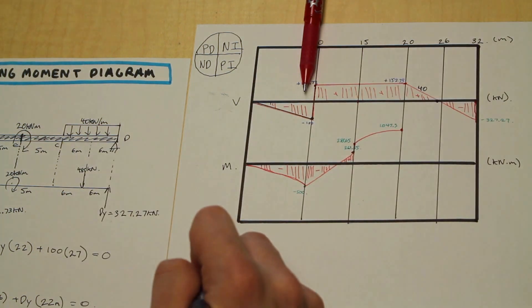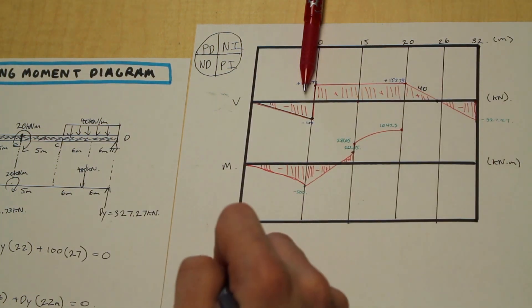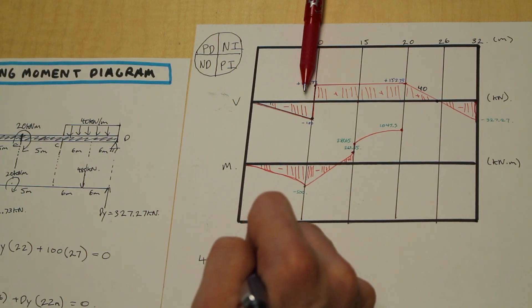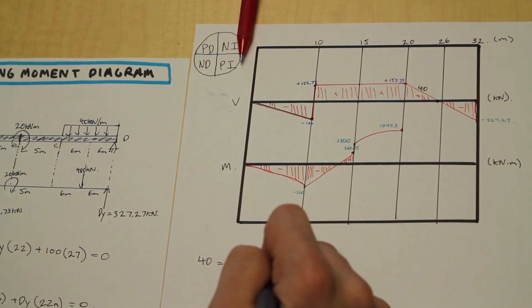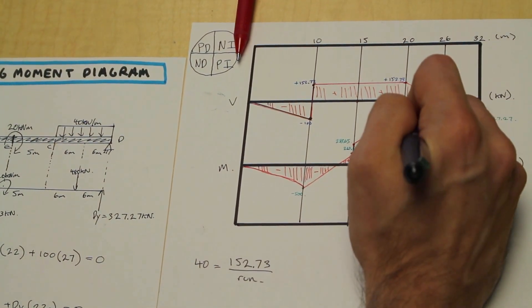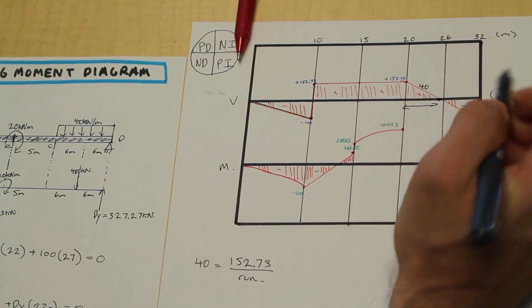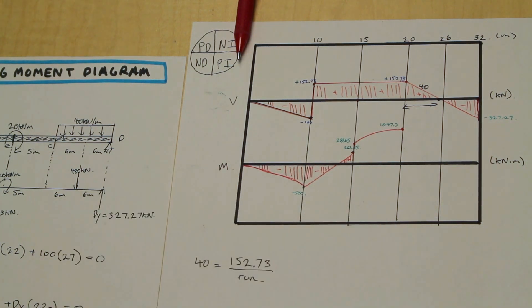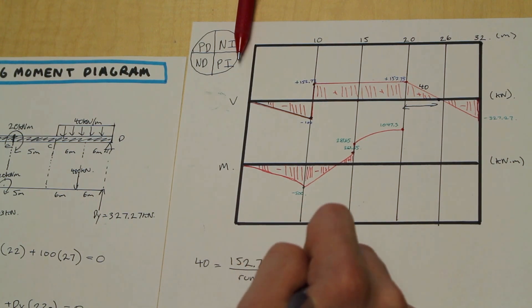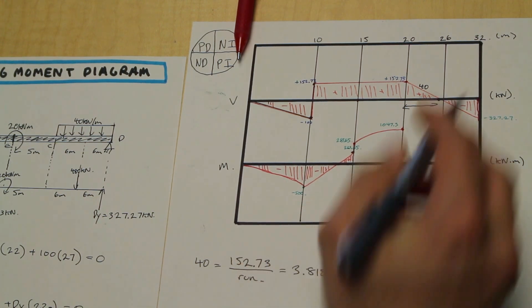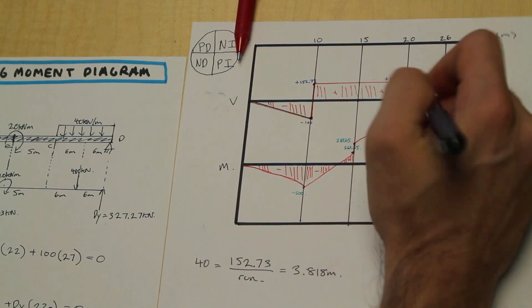So we simply come down here and we say slope is equal to rise over run. Rise is 152.73 over run. And the run is going to be this distance here of that triangle. So solving for that, we get 3.818 meters.